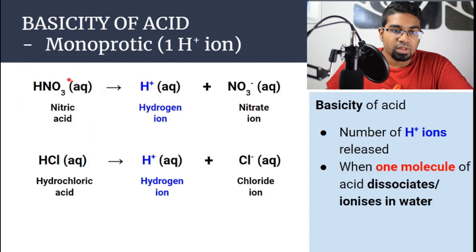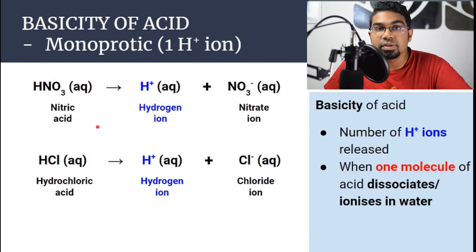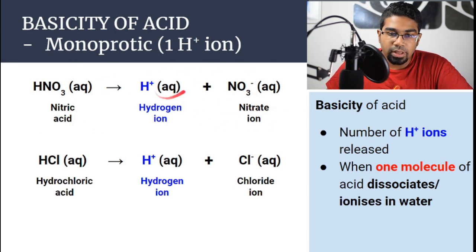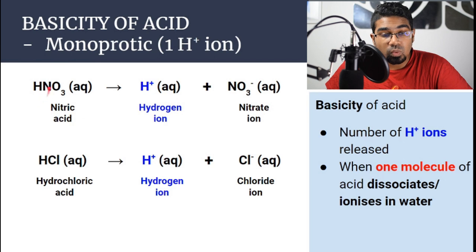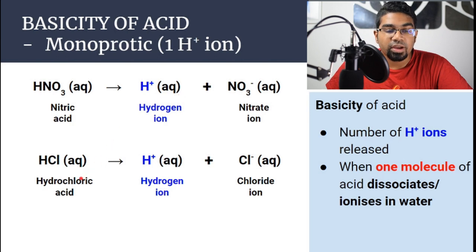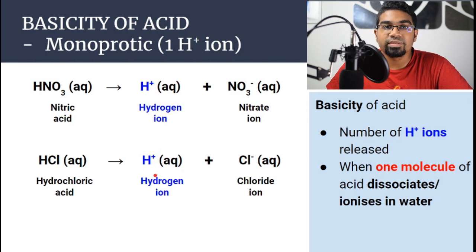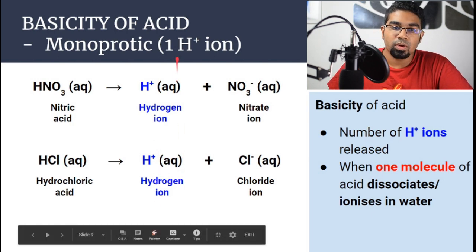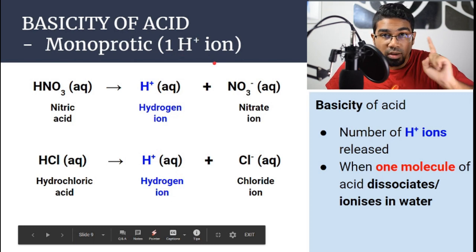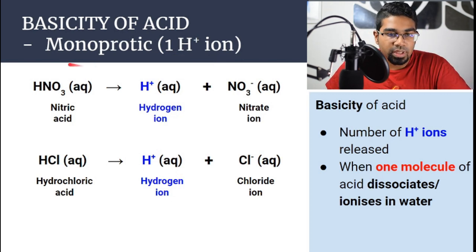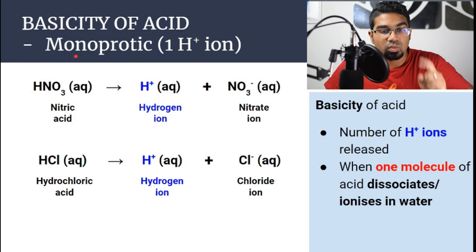For nitric acid, when dissolved in water, it becomes nitrate ion and one hydrogen ion — only one hydrogen ion is released. Same with hydrochloric acid: only one hydrogen ion is released per molecule. Where only one hydrogen ion is released by one molecule of the acid, this acid is said to be monoprotic or monobasic. Mono signifies one, single.